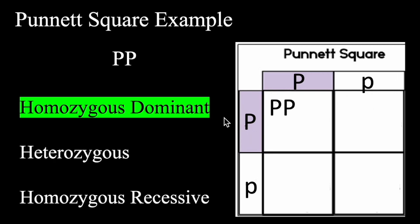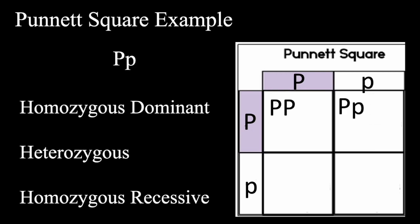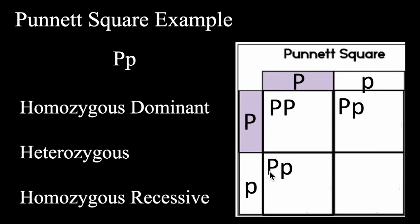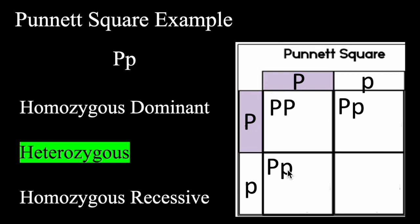In the upper right-hand box, if I bring this dominant allele — this capital letter P — over to the right, and bring the recessive allele from the top down, that's going to result in being heterozygous. In the bottom left box, I bring the lowercase p over and bring the dominant p down, but the dominant letter always comes first. The dominant letter is going to overshadow the recessive letter, making this heterozygous.